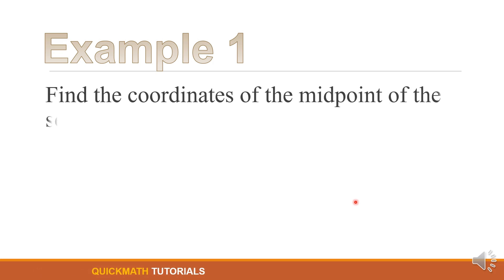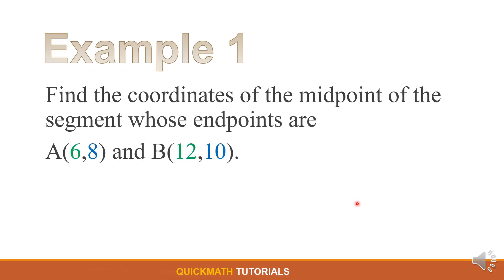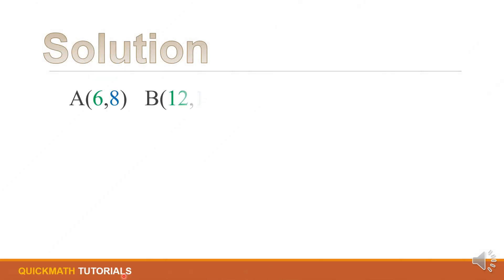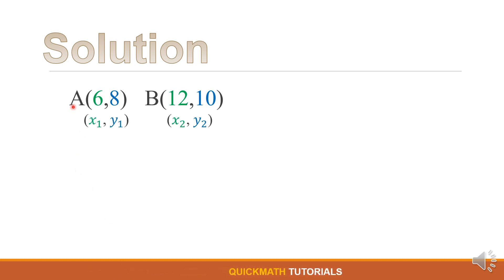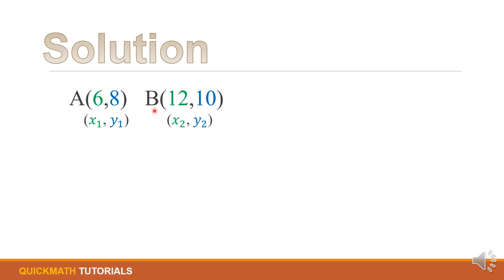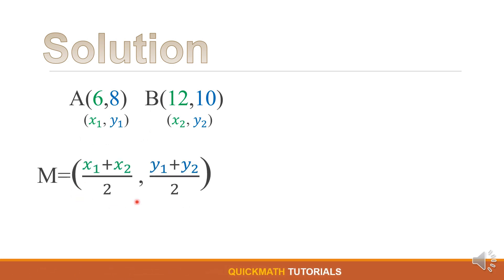Let's have our first example. Find the coordinates of the midpoint of the segment whose endpoints are point A, we have 6 and 8, and point B, we have 12 and 10. For our solution, let's first identify what will be our first point. Let A be our first point so we have x sub 1 and y sub 1, and B as our second point so we have x sub 2 and y sub 2. Or you can have point B as your first point and point A as your second point. Now, using the midpoint formula,